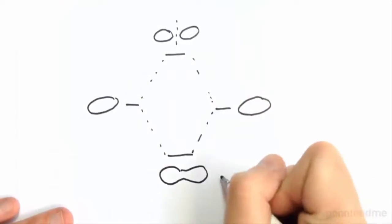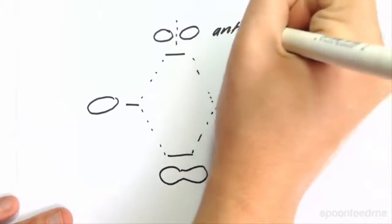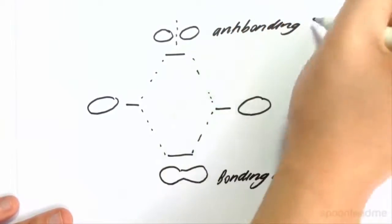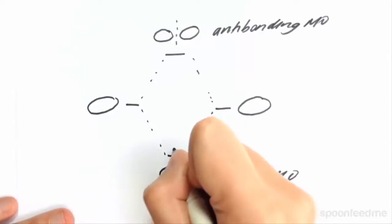This is our bonding MO, and this is our antibonding MO. Now, hydrogen plus contains only one electron. This electron will go into the lowest energy molecular orbital, and therefore goes into the bonding orbital.